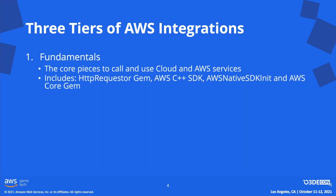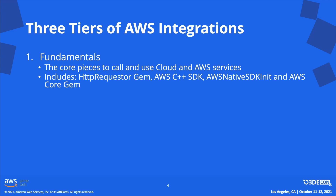I like to think there are three tiers of AWS integrations. First, there's the fundamentals — all the basic pieces required to make successful asynchronous calls to REST services, and specifically AWS services. These include the HTTP request gem, AWS C++ SDK support including the AWS native SDK init components, and the AWS Core gem. This is the focus of the first part of this talk, covered by Junbo.